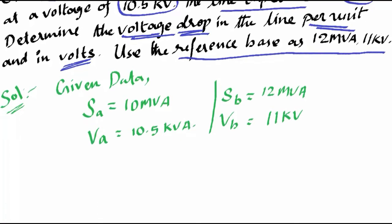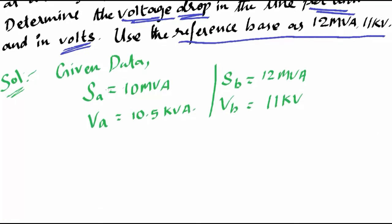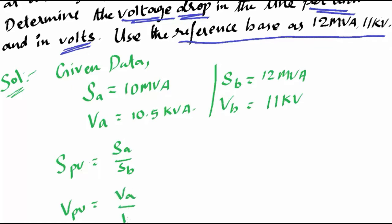Now let us find out the per unit value of the MVA rating. S per unit is equal to S_actual divided by S_base. So S per unit = 10 divided by 12, which equals...